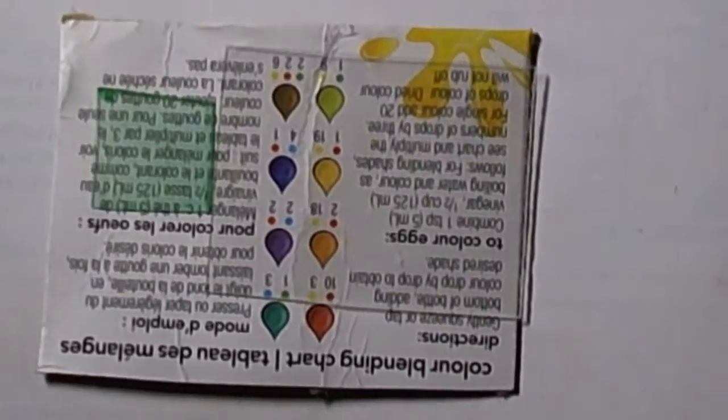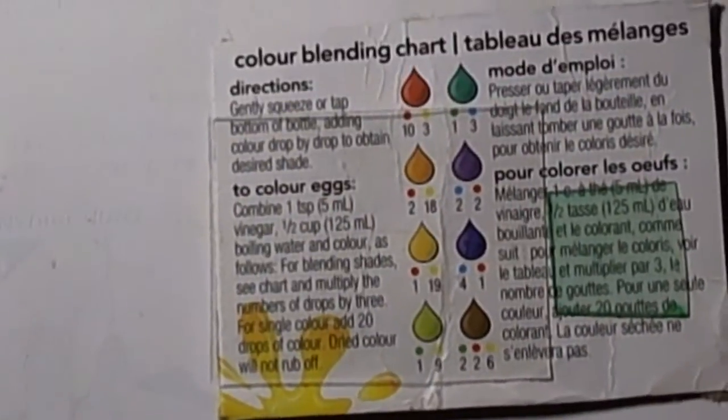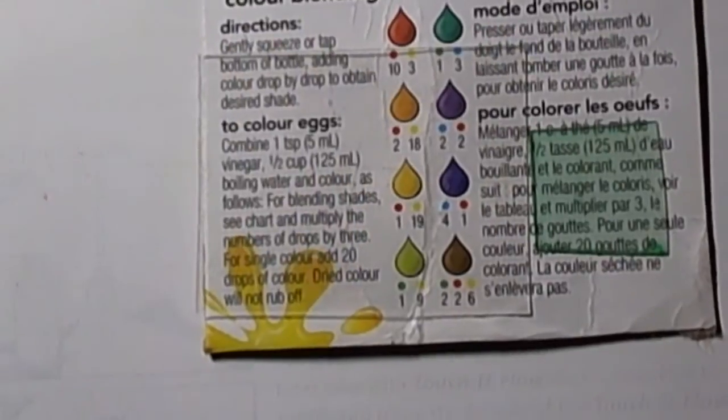I'll flip this around for those that can read backwards. There we go. Coloring blend charts. Yes folks, you guessed it right - it is food coloring.